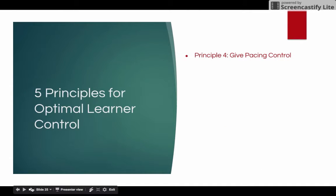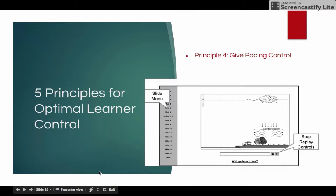Principle four is give pacing control. Allow the learner to go on at the rate that they feel comfortable with. In this example right here, a learner has a little video, but they're broken down into slides. So the learner can go back and choose the slide that they want to go to or the slide they need to review. It also gives the learner control to play and to stop and to rewind it and back it up in case they miss something.